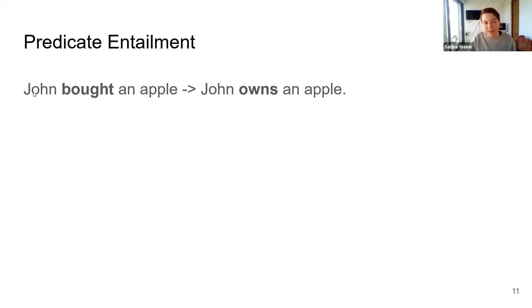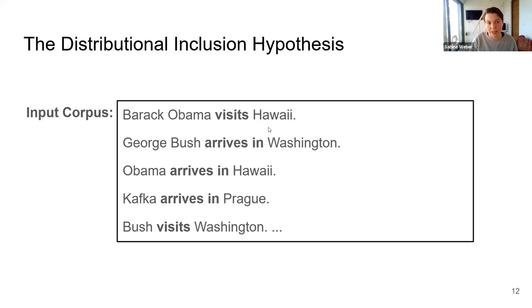For example, this example, when we see John bought an apple, we now know that John owns the apple and John can do all sorts of other things with the apple. And what we want to do is to learn these kinds of entailment like the example for buying and owning from a large corpus of text. The way we go about doing this is that we take an input corpus of news texts that might have all sorts of different sentences. This is a toy example.